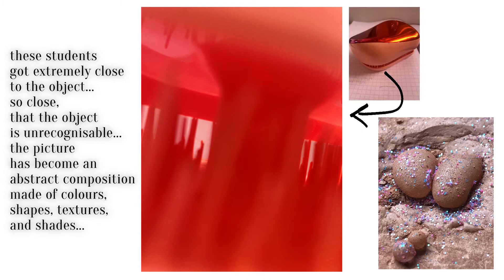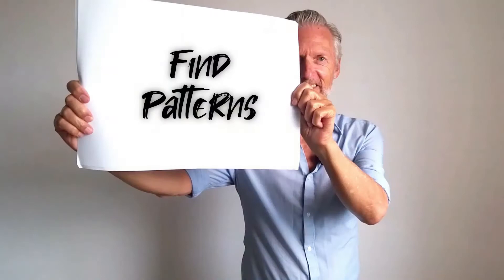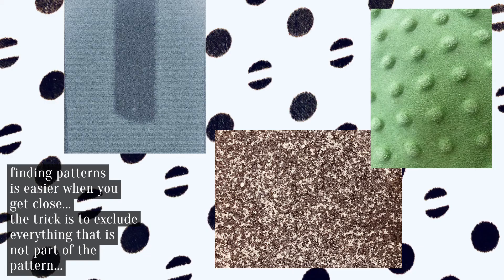The first idea is to get extremely close to your subject, crop out all the edges and the context so that your photograph focuses on colours, shapes, patterns and surface. Look for patterns in your surroundings. Come close with your camera and exclude everything that isn't part of the pattern.